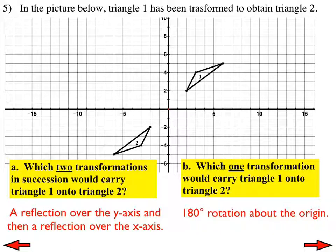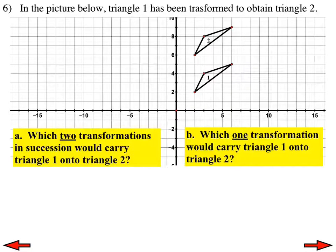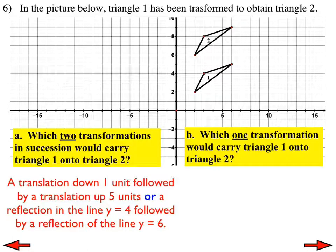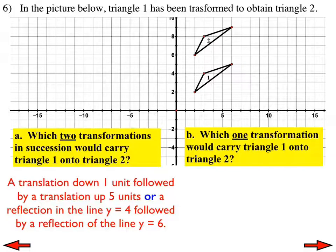Number 6: same idea, different picture — triangles 1 and 2. Part A asks for two transformations in succession. There's more than one way: I came up with a translation down 1 unit followed by a translation up 5 units, or a reflection over the line y = 4 followed by a reflection over the line y = 6. Part B: which one transformation? That's a straight translation 4 units up.